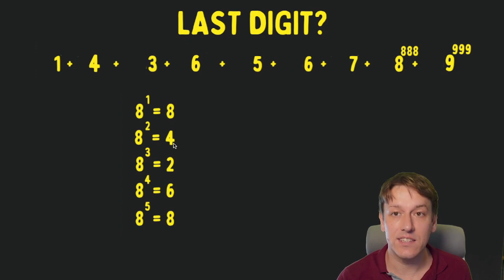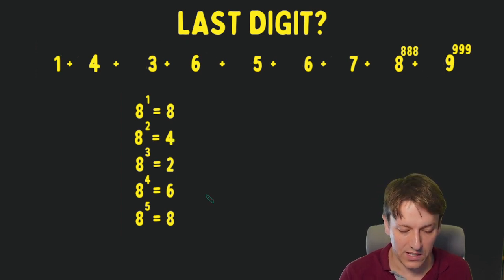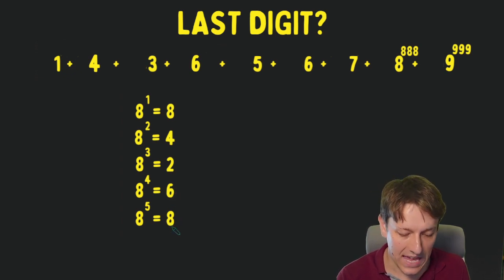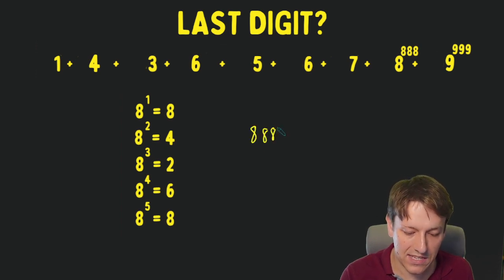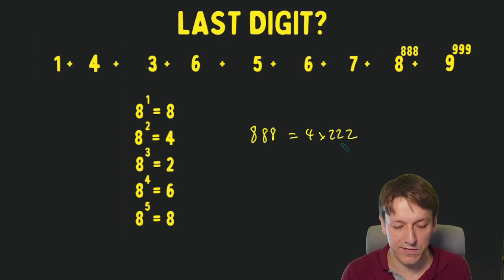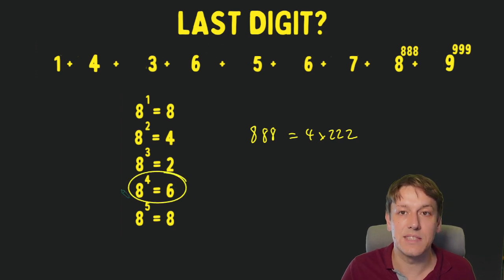Then the same logic for 8. 8 times 8 is 64, so just take the 4 times it by 8 to get 32, take the 2 times it by 8 to get 16, take the 6 times it by 8 to get 48, and then we're back into that repeating pattern. 888 of course is exactly 4 times 222, so it's a multiple of 4, then 8 to the 888 is going to have the same last digit as 8 to any other multiple of 4, so the last digit is going to be 6.